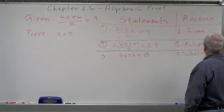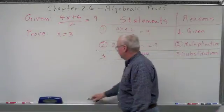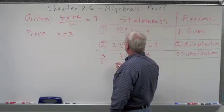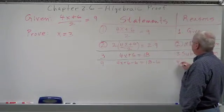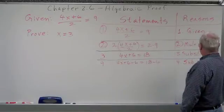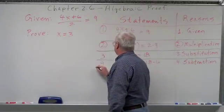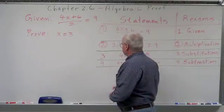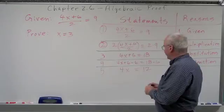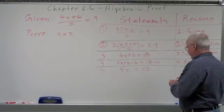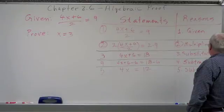The reason for statement three is Substitution — we substituted. Now, what's the next thing we need to do? Be nice to get rid of this 6. So the next statement is: 4x plus 6 minus 6 equals 18 minus 6. That's Subtraction Property. Statement five: 4x equals 12, and the reason is Substitution.